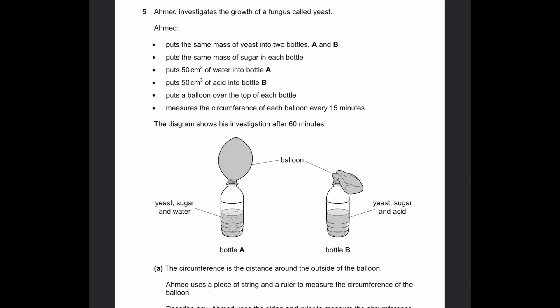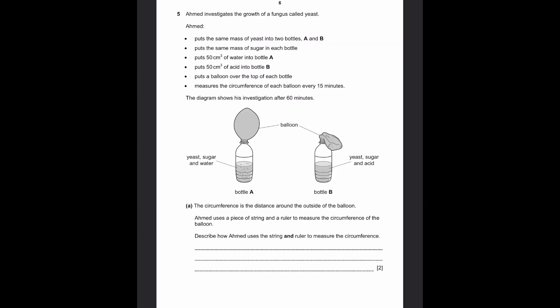Question 5. Ahmed investigates the growth of a fungus called yeast. He puts the same mass of yeast into two bottles, A and B — 50 cm³ of water into bottle A and 50 cm³ of acid into bottle B — then puts the same mass of sugar in each bottle, puts a balloon over the top of each bottle, and measures the circumference of each balloon every 15 minutes. Part A: describe how Ahmed used the string and ruler to measure the circumference.